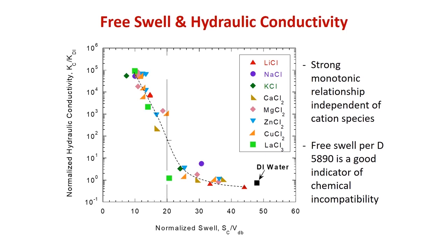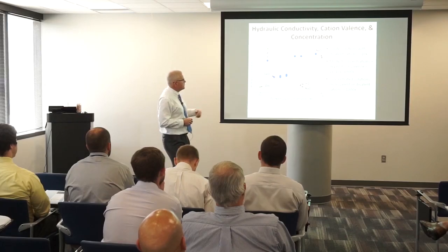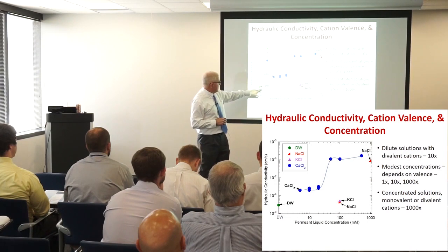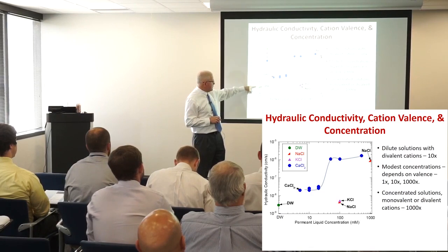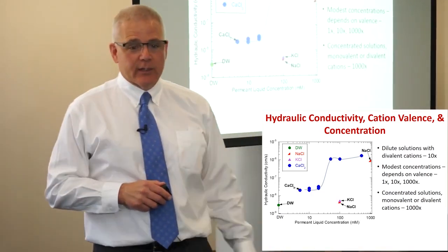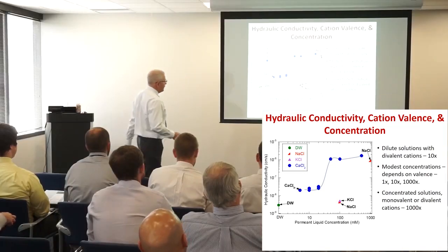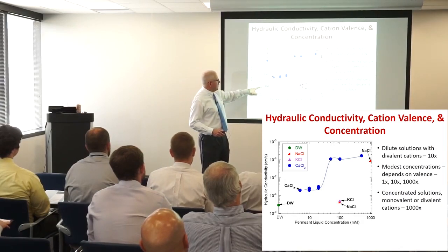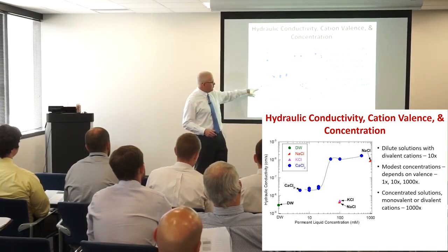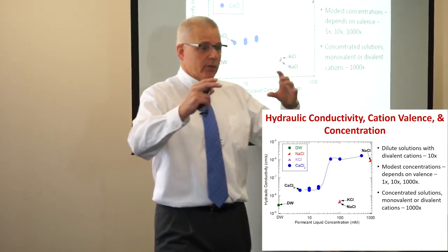To illustrate this with data, here are different types of solutions. With deionized or distilled water, the hydraulic conductivity of a GCL is about 2–3 × 10⁻⁹ cm/s, which is almost universal for conventional bentonite. When we run that same test with a dilute calcium chloride solution, we go up by almost a factor of 10, because calcium chloride contains divalent calcium and the bentonite doesn't swell as much.